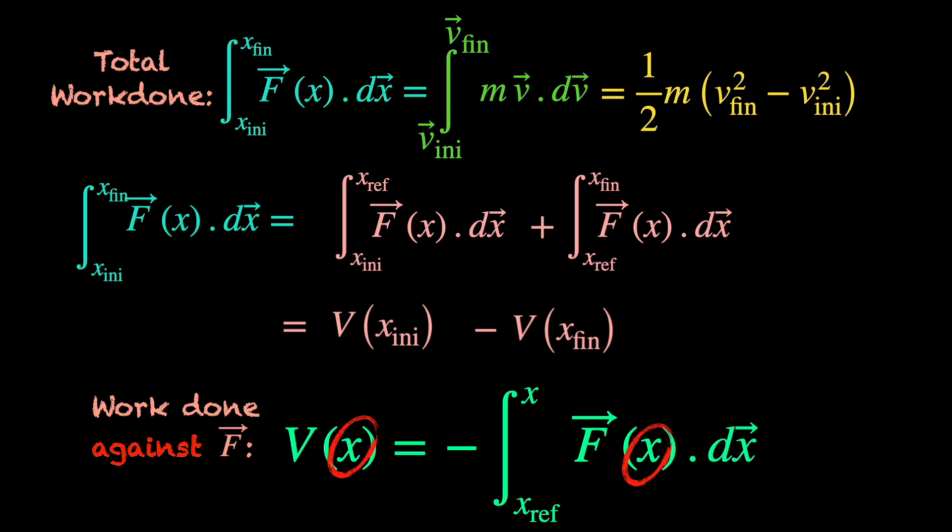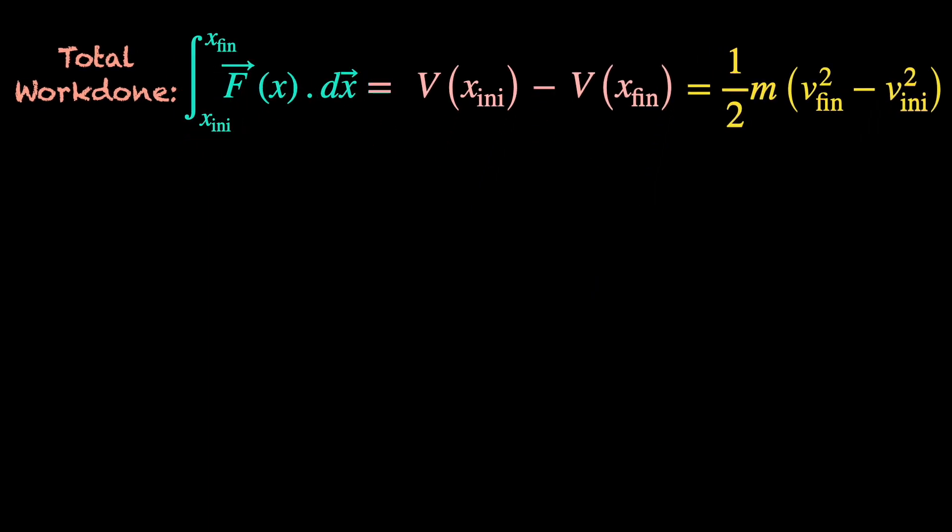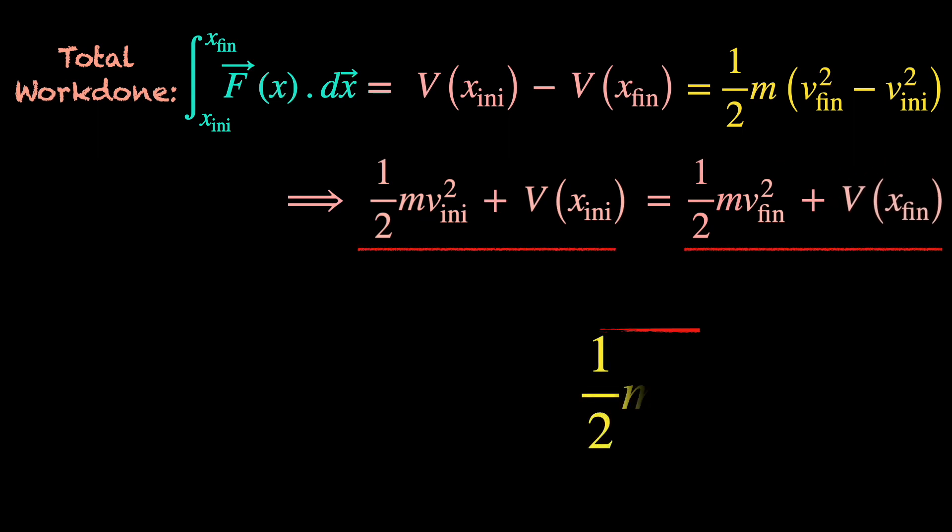By the way, do remember that x here symbolically represents all three position coordinates in three dimensions. So, the work done integral is now v of x initial minus v of x final and it equals half m times final velocity squared minus initial velocity squared. Rearranging the terms so that the left side depends on the initial position and velocity and the right side on the final ones, we see that both sides have the same structure: half m v squared plus v of x.